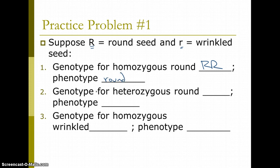The genotype for heterozygous round, hetero means different, so big R, little r, and it's round because the big R is dominant. So, it shows when it's there. And little r is recessive, so it's hidden in the presence of the dominant allele.